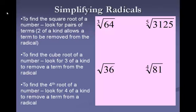When you have a square root, you're looking for pairs of 2s. Two of a kind means that it can leave the radical. When it's a cube root, it takes 3 of a kind to leave the radical. Fourth root takes 4 of a kind, and so on. So in this first example, we're doing the cube root of 64.